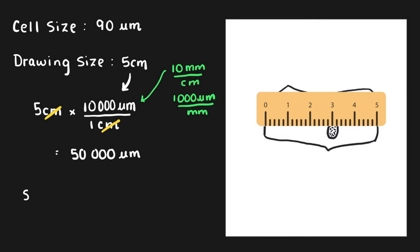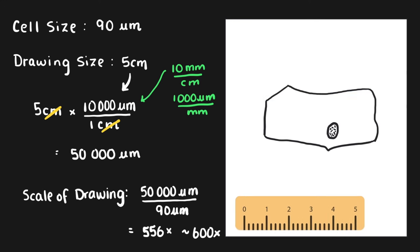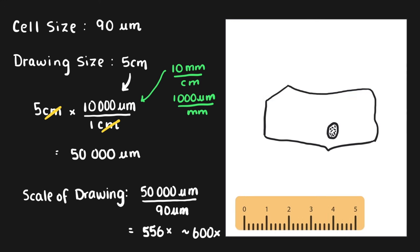Now we can do the scale of our drawing. That's going to be 50,000 micrometers, how big our drawing is, over 90 micrometers, how big the cell is. We find that we've made our drawing 556 times bigger. We're going to round that up to 600 times bigger. So our drawing is 600 times bigger than the actual cell.